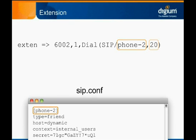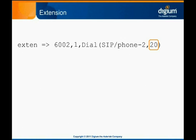The second argument passed to the Dial application is the timeout. This is the maximum number of seconds the endpoint will ring. If the timeout is reached without the endpoint being answered, the call exits the Dial application and moves to the next priority in the extension. If there are no more priorities, as is the case in this example, then the call is hung up.